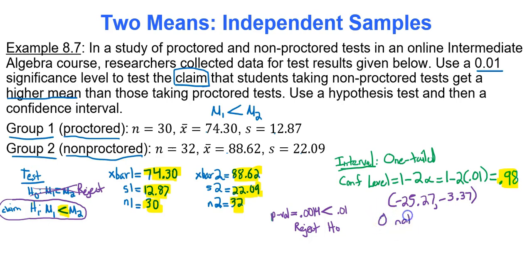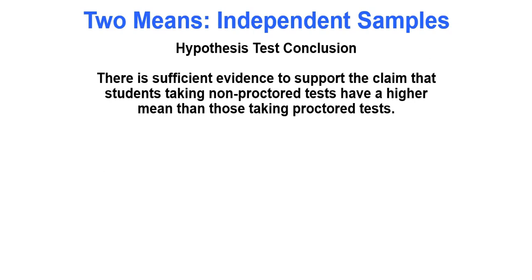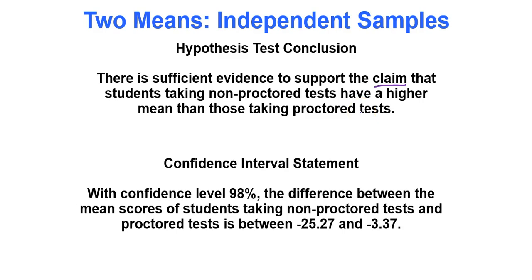Zero is not in the interval, so there is likely a difference. For the hypothesis test, the conclusion is: there is sufficient evidence to support the claim that students taking non-proctored tests have a higher mean than those taking proctored tests. For the confidence interval: with 98% confidence, the difference between the mean scores of students taking non-proctored tests and proctored tests is between negative 25.27 and negative 3.37.